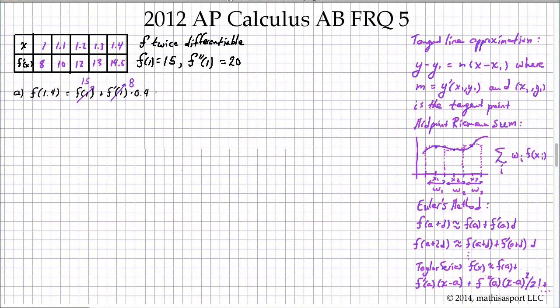So putting that together, we get 15 plus 8 times 0.4. That's going to be 15 plus 3.2, which gives us 18.2 as our first answer.